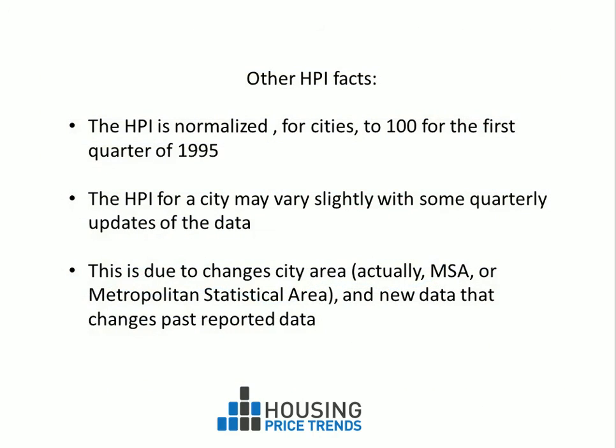I should mention some other facts about the Housing Price Index. The HPI is normalized for cities to 100 in the first quarter of 1995. You may also notice that the HPI for a city may vary slightly with some quarterly updates of the data. This is mainly due to changes in the city area and also new data that comes in that changes past reported data.